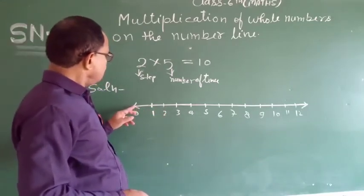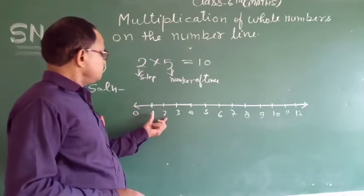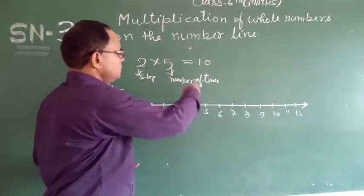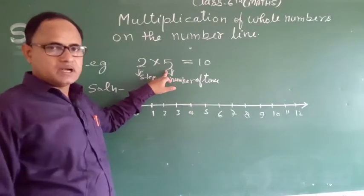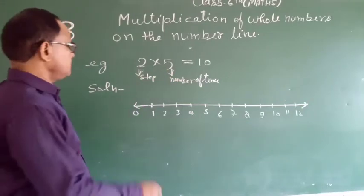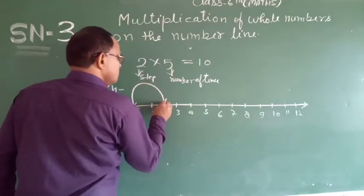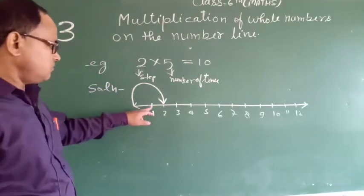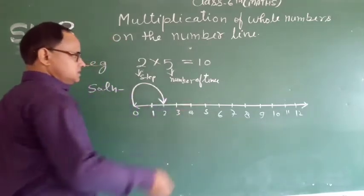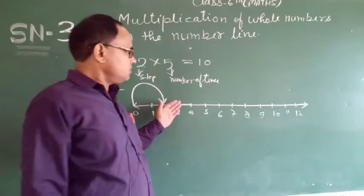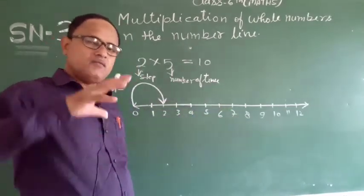We move from 0 to 2, taking a step, moving toward the right side 5 times. We move toward the right side in steps of 2, repeating this 5 times.